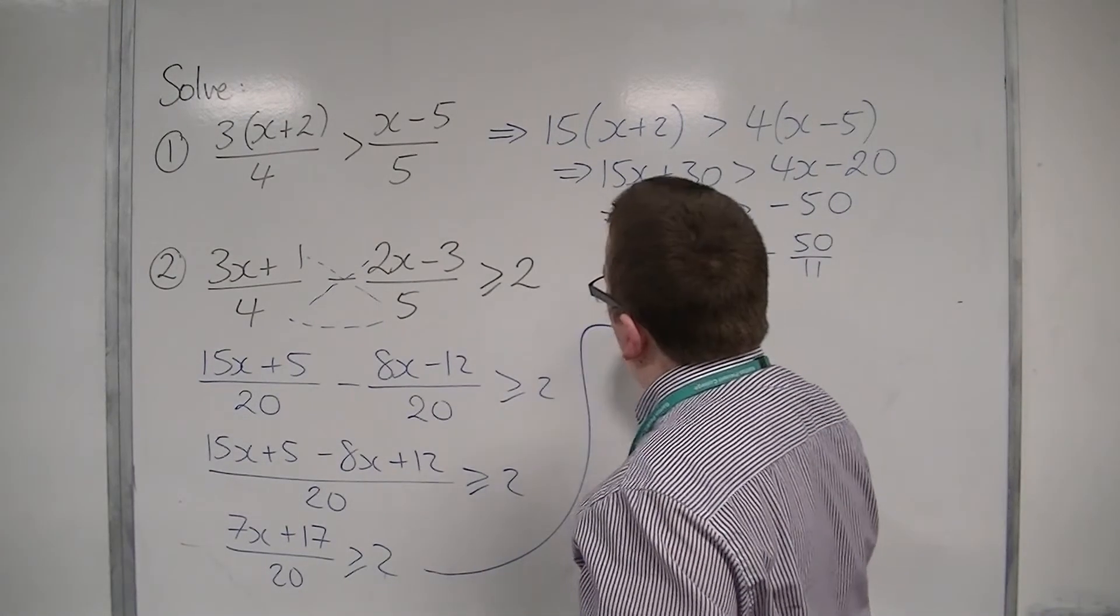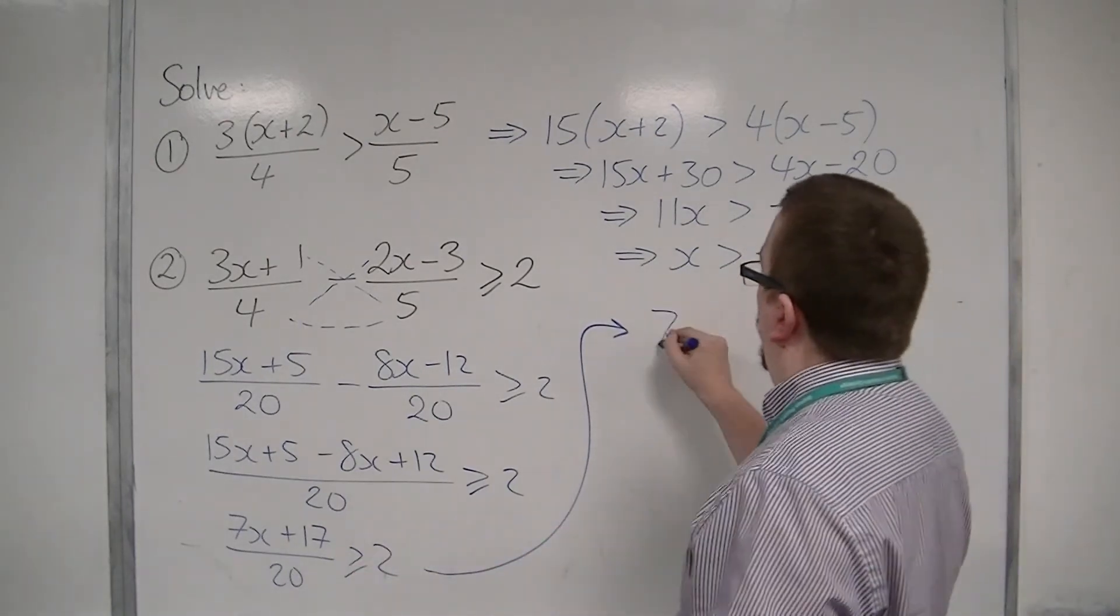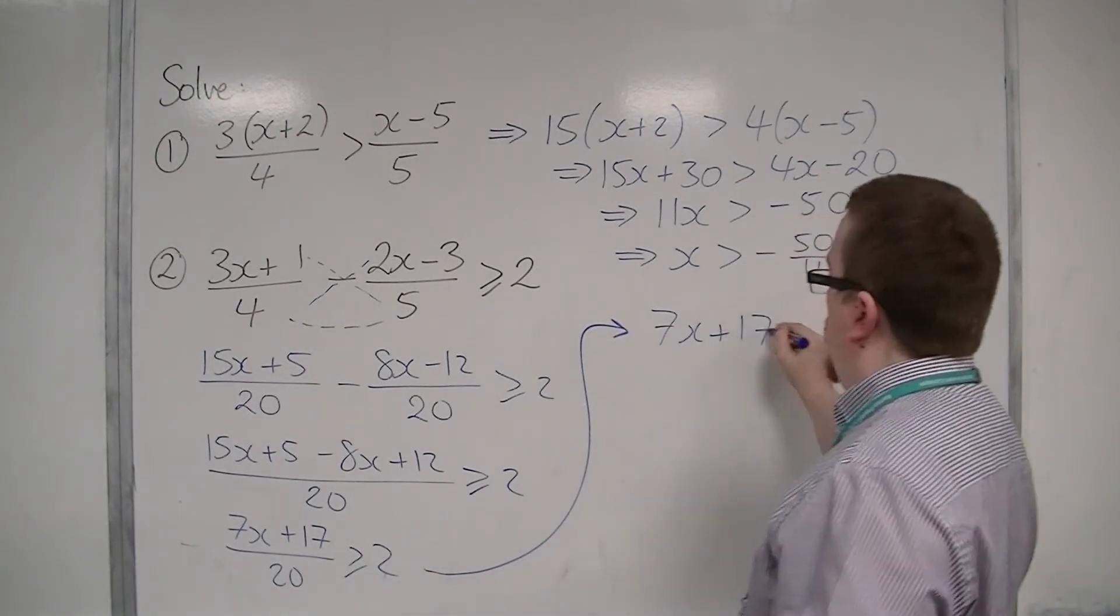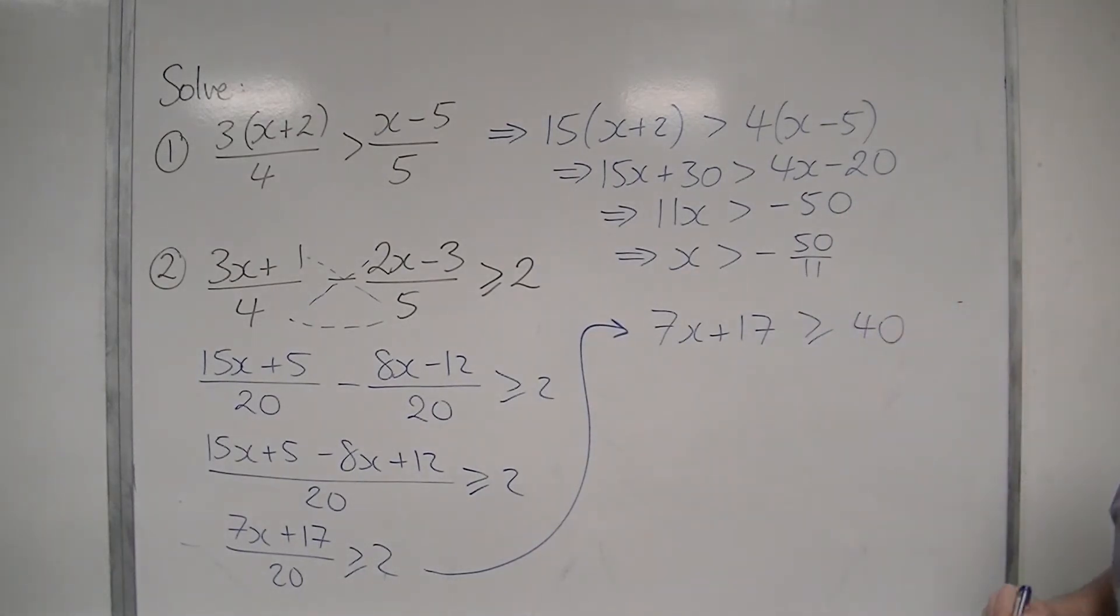So let's go up here now. Now, if I multiply both sides by the 20, 7x plus 17 is greater than or equal to 40, so 2 lots of 20.